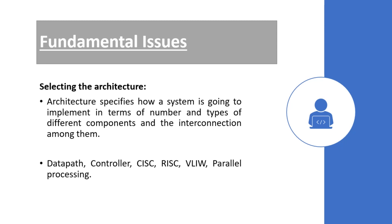The next stage is architecture design, and here too we face an issue in selecting the architecture. A model captures only the system characteristics and does not provide information on how the system can be manufactured — there are different rules and regulations which must be followed during manufacturing. The architecture specifies how a system is going to be implemented: the number and types of components and how they are interconnected. It is therefore important to choose the best architecture that agrees with the chosen model and with the requirements.